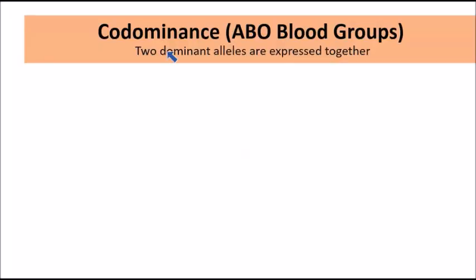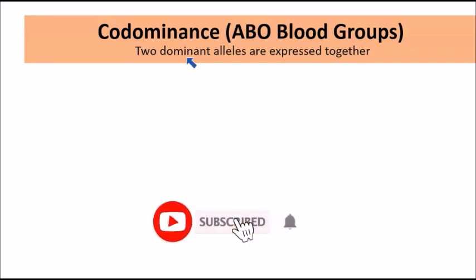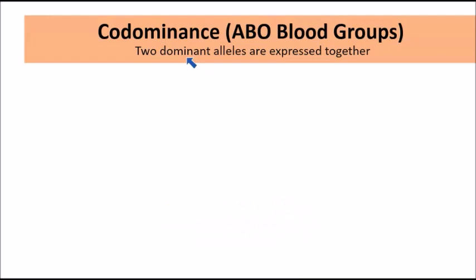Let's look at co-dominance and the inheritance of ABO blood groups. This is similar to the inheritance of flower color where we looked at incomplete dominance, where you had a mixture of traits. Now in ABO blood groups with co-dominance, you have two dominant alleles that are going to be expressed together — not so much a mixture, but each of the alleles being expressed at the same time.